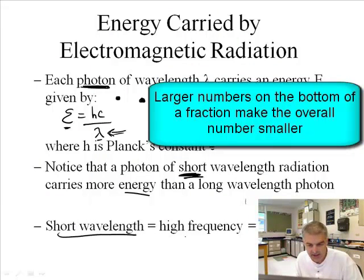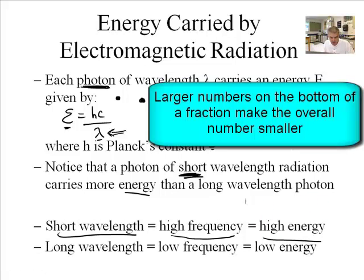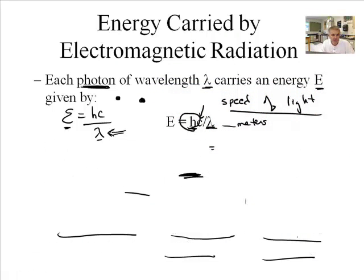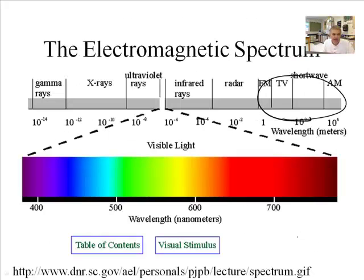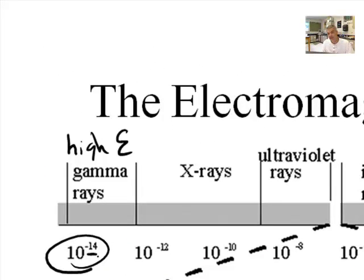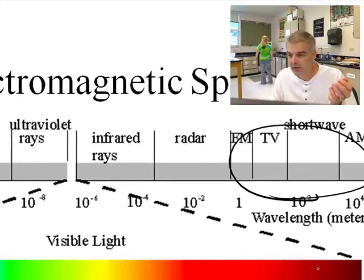So short wavelengths have high frequency, and they therefore have high energy. Long wavelengths have low frequency and low energy. So if we go back to our picture, I'll have to click a few times. That would make gamma rays would have high energy. So you should label that on your spectrum. Because it's, like, really, really short. 10 to the negative 14th, that's .0000 bunch of zeros and a one.